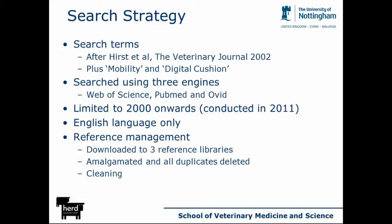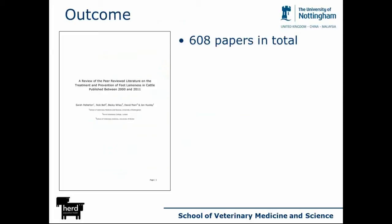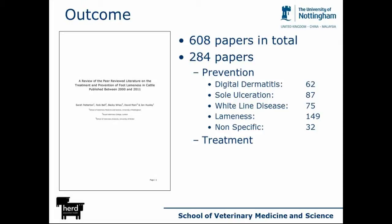We performed a systematic review of the literature using a number of search engines and a large string of search terms. Because of financial constraints, the search was limited to 2000 onwards; it was conducted in 2011, covering an 11-year period, and was limited to English language only. We compiled an extensive database of peer-reviewed literature on the treatment and prevention of lameness, ending up with 608 papers in total.